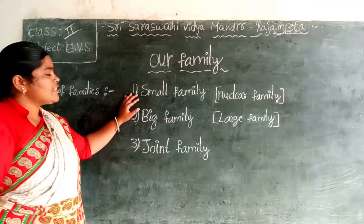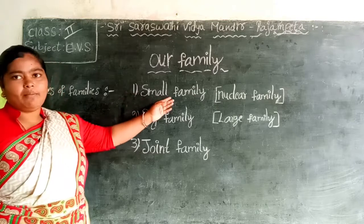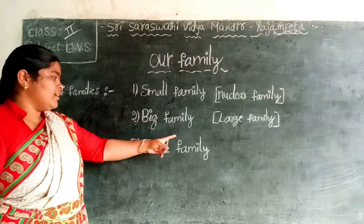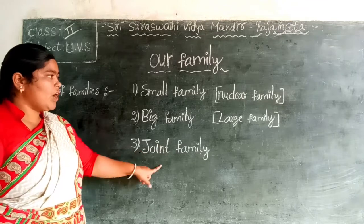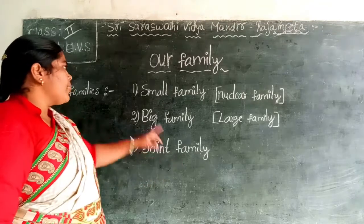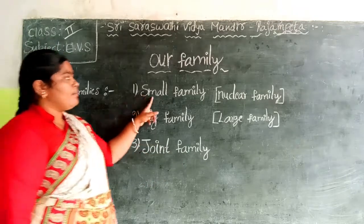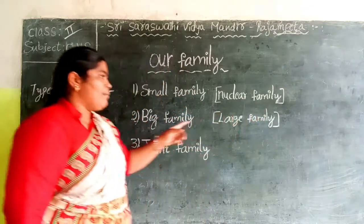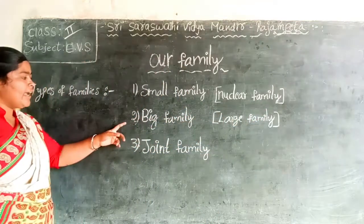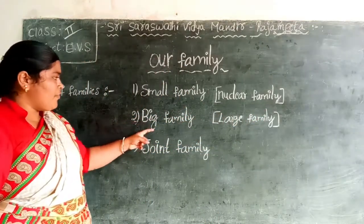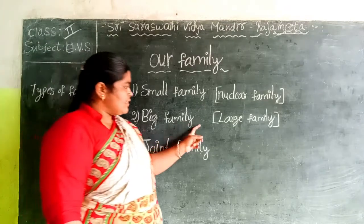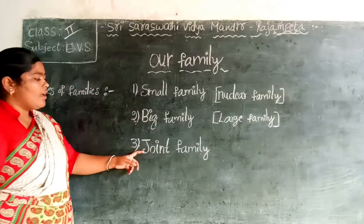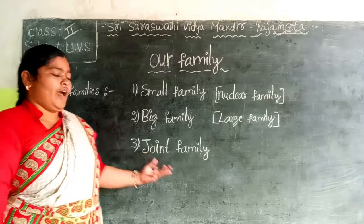The first one is small family, the second one is big family, and the third one is joint family. A small family is called a nuclear family, a big family is called a large family, and the third one is a joint family.